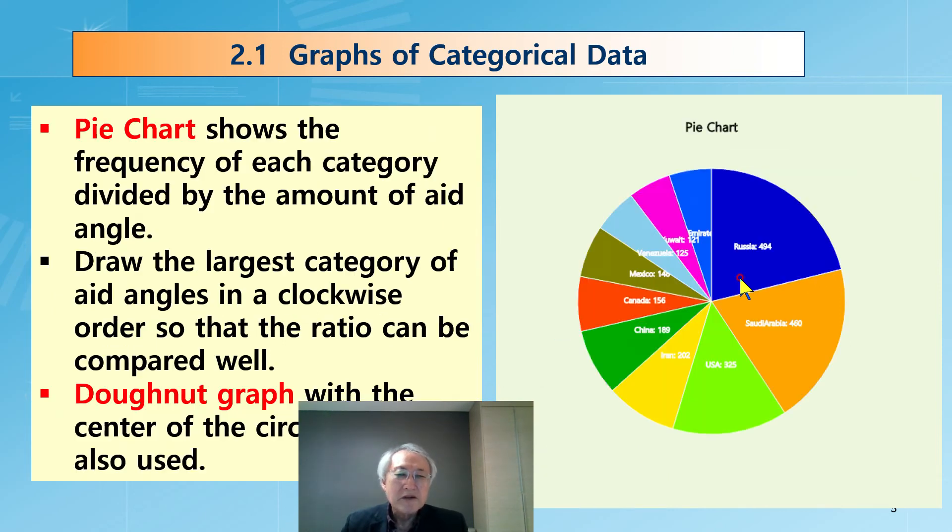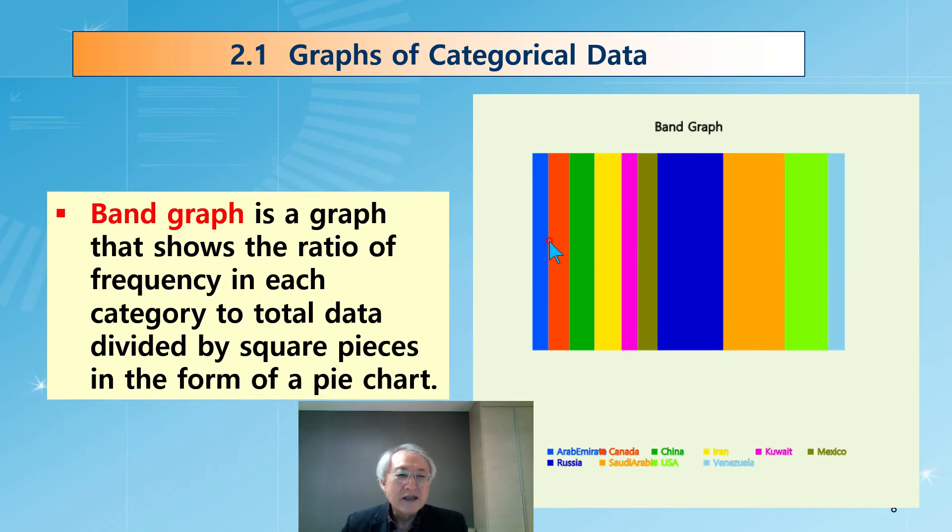But since we already have the pie chart, it is arranged in order. In case of E-STAT, we didn't sort them. The occurrence from the first one, first category, we just draw it.